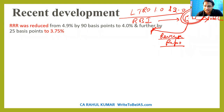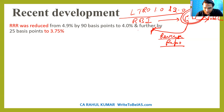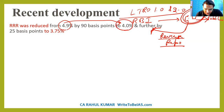This reverse repo rate mechanism is preferred by commercial banks because RBI gives sovereign guarantee — their money is safe with RBI. So commercial banks started depositing the money with the RBI rather than distributing the money to the general public. Therefore, RBI reduced the reverse repo rate first from 4.9% to 4%, and then further to 3.75%.